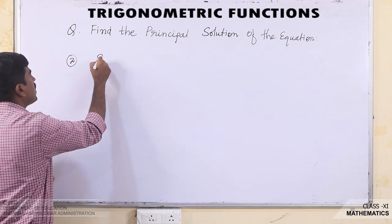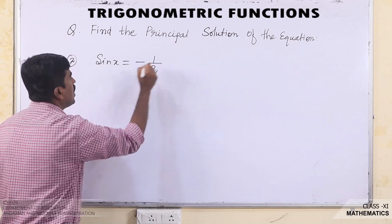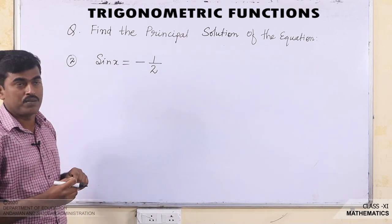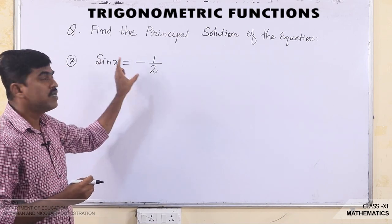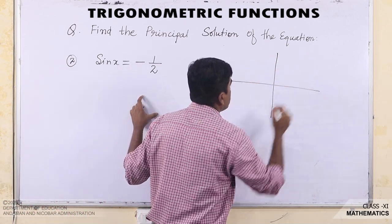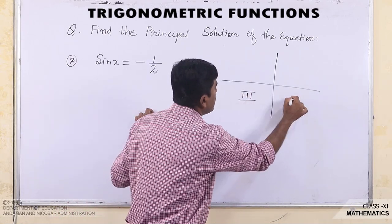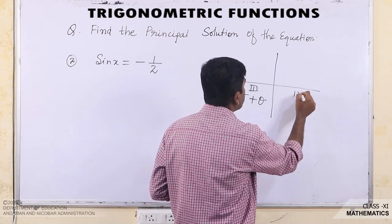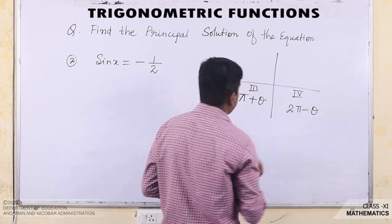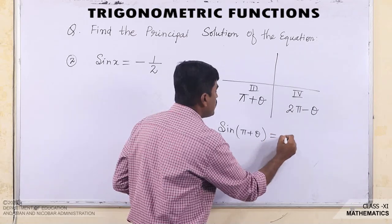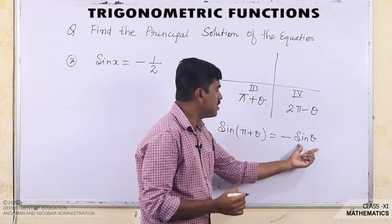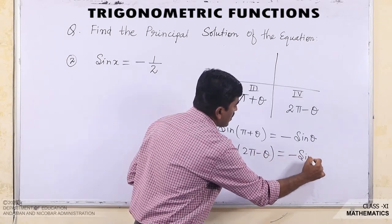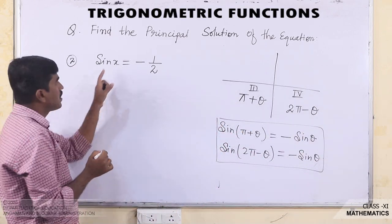Now let us find the principal solution of sin x = −1/2. Here the value of sin x is negative. We know that sin function is negative in the third quadrant and fourth quadrant. So in this case, the principal solutions will be of the form π + θ and 2π − θ, since sin(π + θ) = −sin θ and sin(2π − θ) = −sin θ.